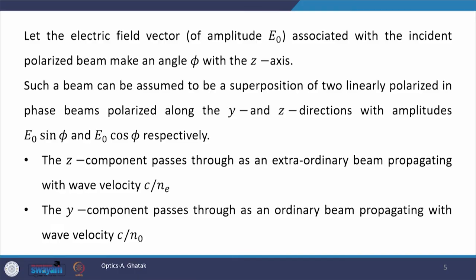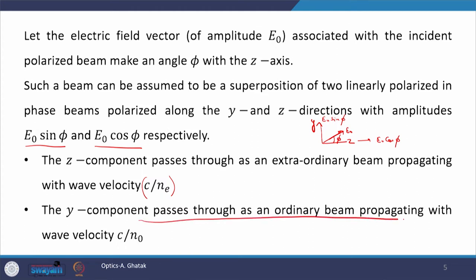Since the incident amplitude is E₀, the amplitudes after decomposition along y and z directions are E₀ sin φ and E₀ cos φ respectively. Along z we have E₀ cos φ, while along y we have E₀ sin φ. The z component, which is along the optic axis, passes through as an extraordinary beam with velocity c/N_E, while the y component passes through as an ordinary beam with velocity c/N_O.